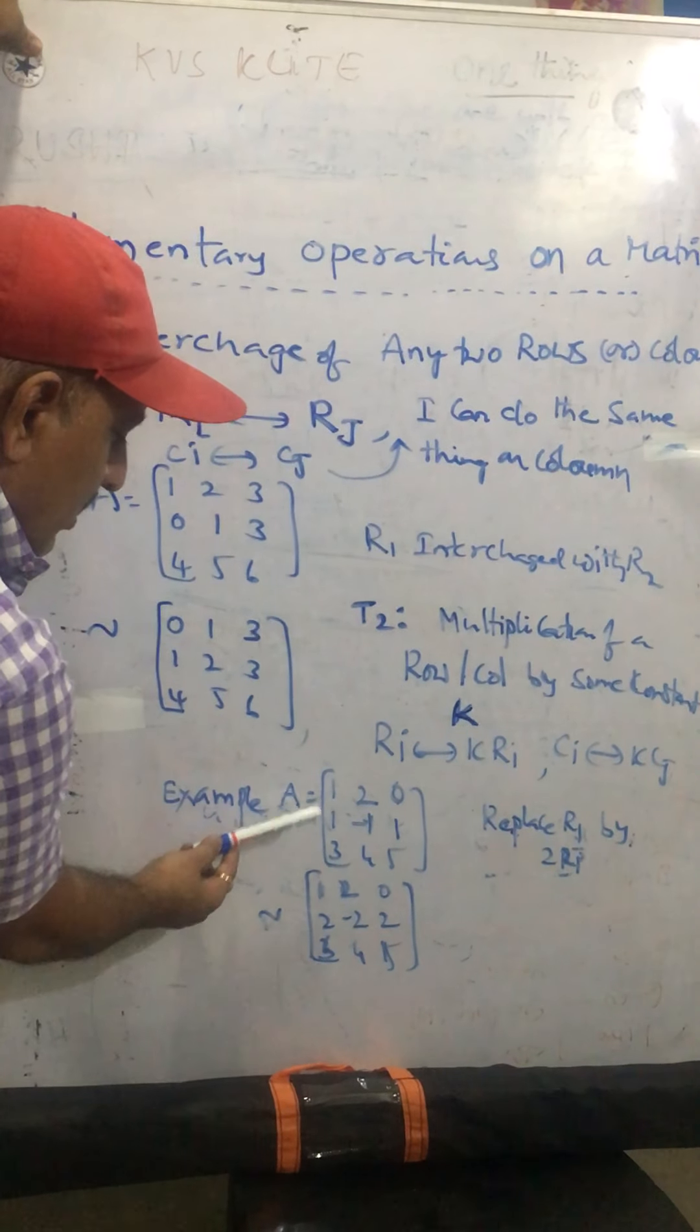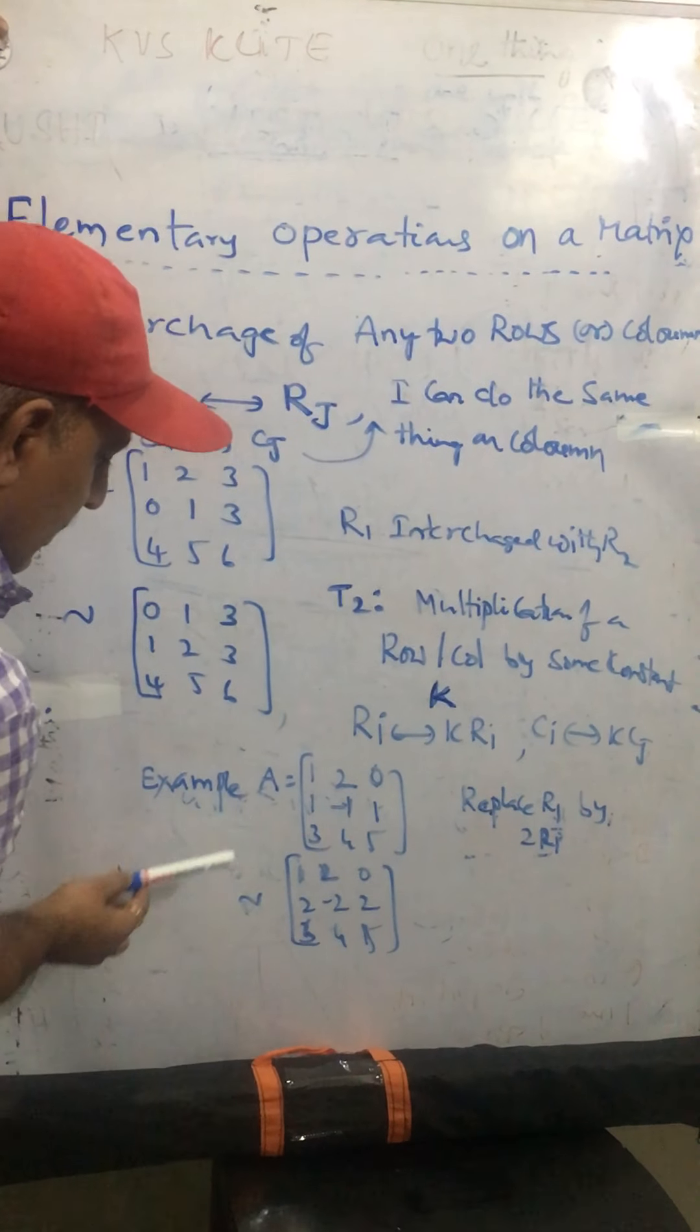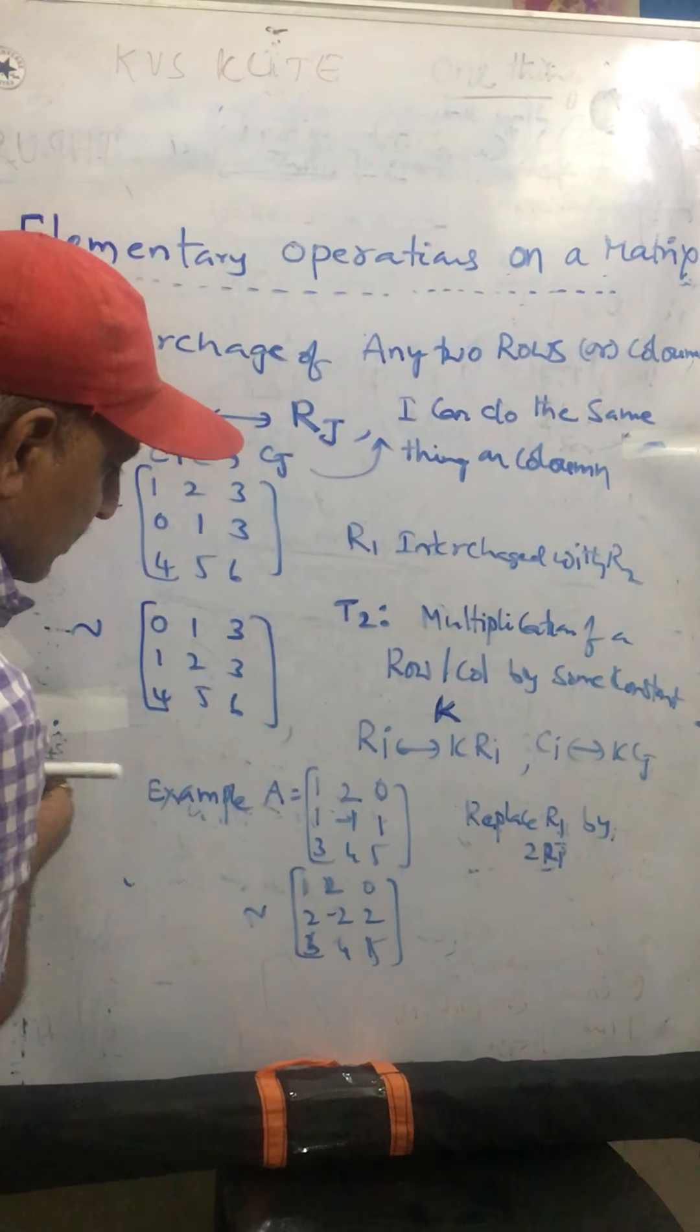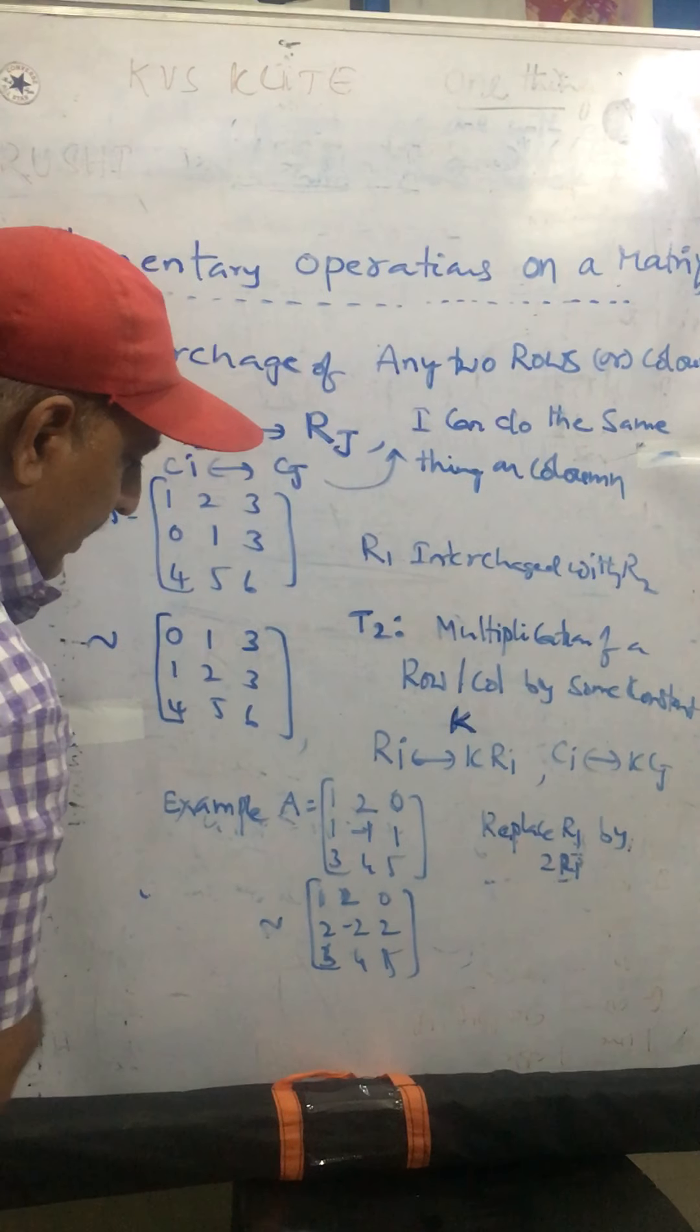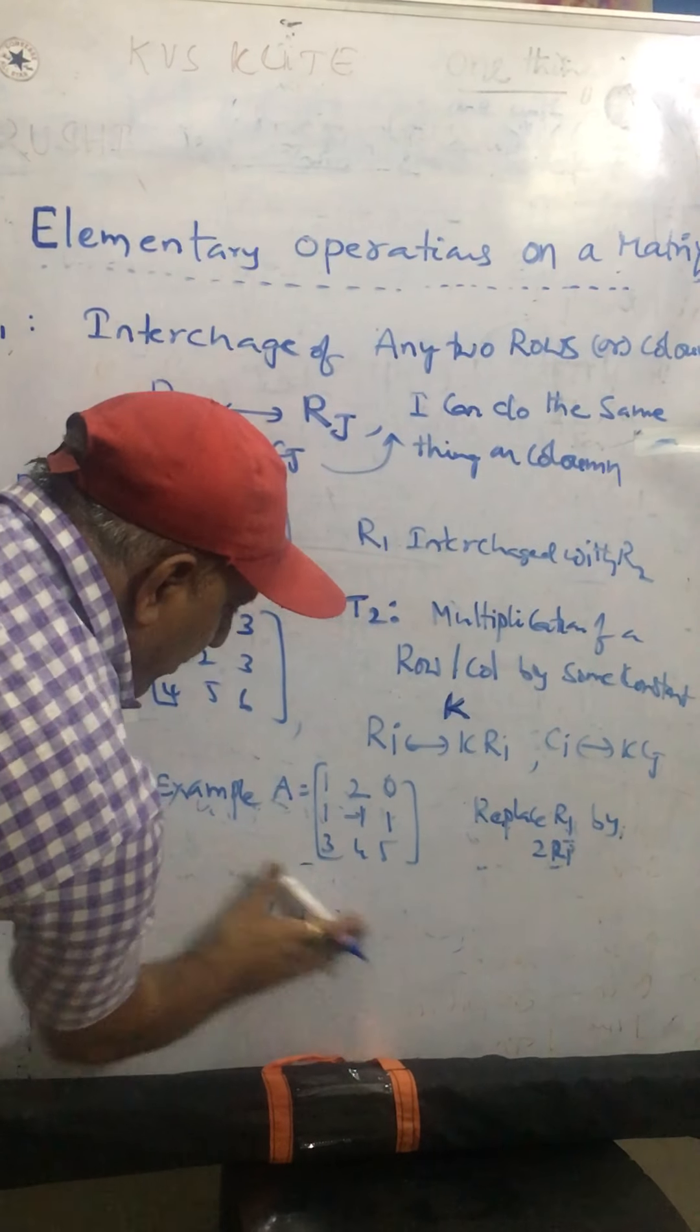On this, what I am doing, replacing R1 by row 1 elements by 2 times of R1. That means, multiplying this row elements with 2.